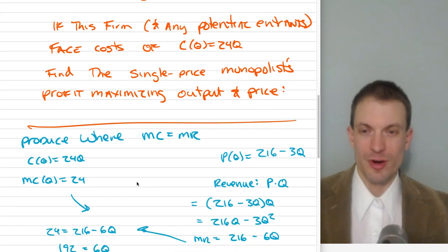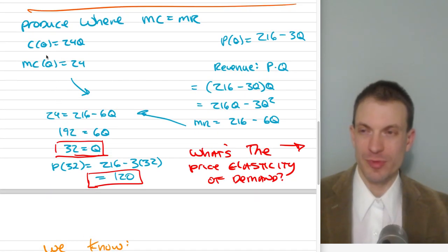Well, we know our firm wants to produce where marginal revenue equals marginal cost. So total cost C(Q) equals 24Q. Marginal cost is the first derivative of total cost with respect to output, so MC(Q) is going to be 24.